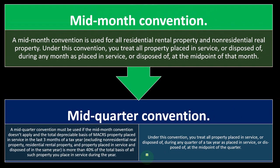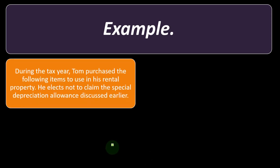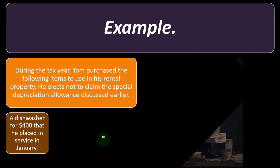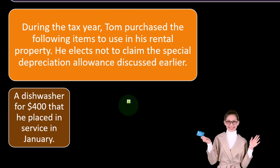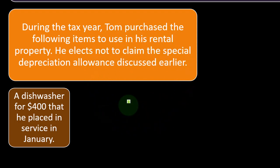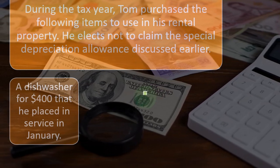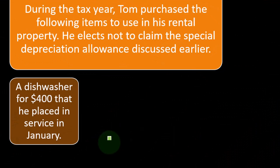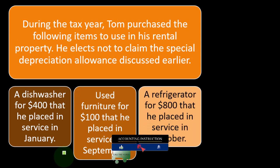Under the mid-quarter convention, you treat all property placed in service or disposed of during any quarter of a tax year as placed in service at the midpoint of that quarter. Example: during the tax year Tom purchased the following items for his rental property. He elects not to claim the special depreciation allowance. Note that when discussing other property we also have Section 179 and special depreciation, which can allow more upfront deduction, but our focus here is on the underlying MACRS depreciation. Tom purchased a dishwasher for $400 placed in service in January.